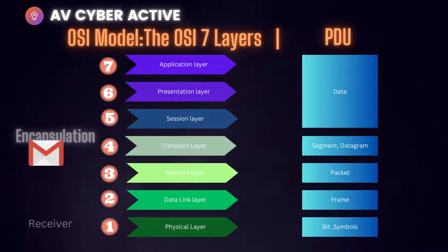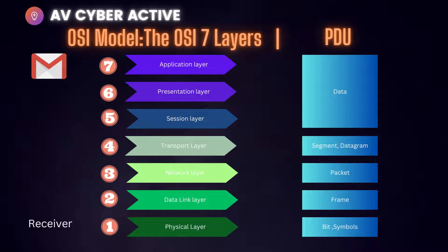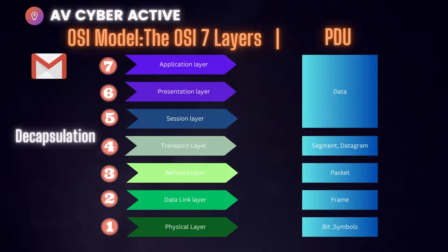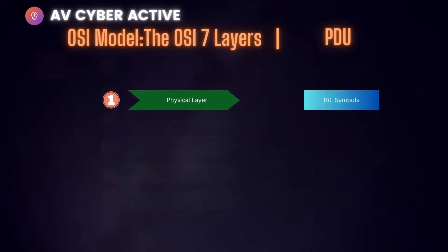When the receiver gets the data and starts stripping out each header from every layer — right from layer one, the physical layer, up to layer seven, the application layer — this process is called decapsulation. For the purpose of this video, we're going to discuss only the attacks at the physical layer and the countermeasures that can be applied to mitigate their impact.